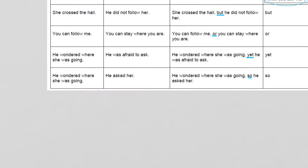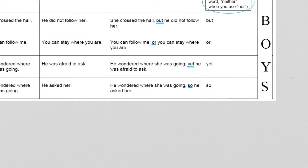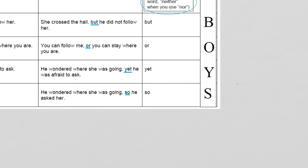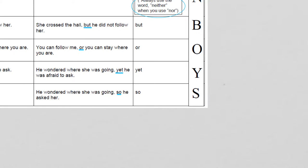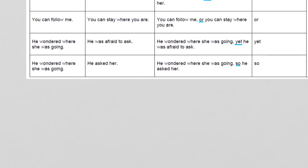Next example: 'She crossed the hall' and 'He did not follow her' combine to: 'She crossed the hall, but he did not follow her.' Our coordinating conjunction is 'but.'